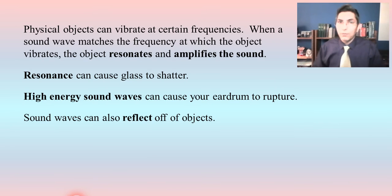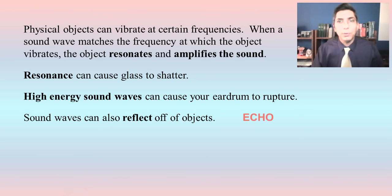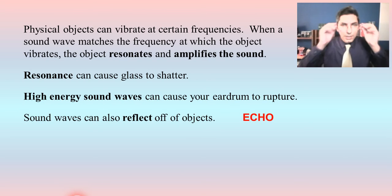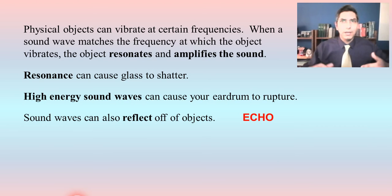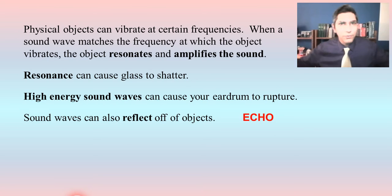Sound waves cannot only resonate through an object — they also reflect off of objects, and that's something we normally call an echo. If you've ever been in a stadium or sports arena where there's an announcer talking, you hear an echo because the sound is reflecting off the stands, the walls, or the concrete.